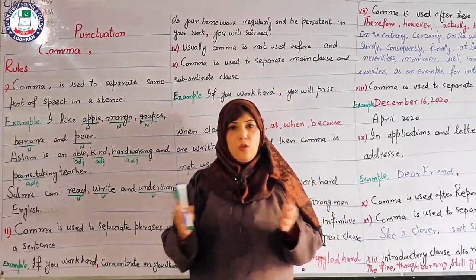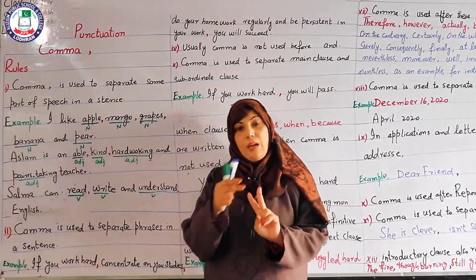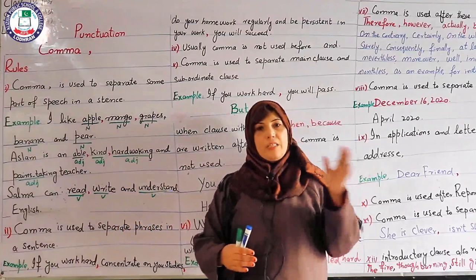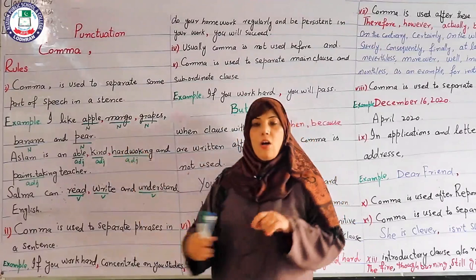So dear students, rule number one: if there are two words of the same part of speech in a sentence, we use 'and' between them. But if there are more than two words of the same part of speech, we use commas to separate the words and then 'and' before the last one. This is a very general rule.